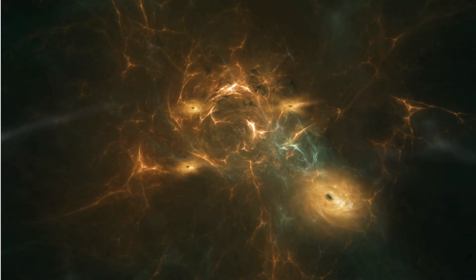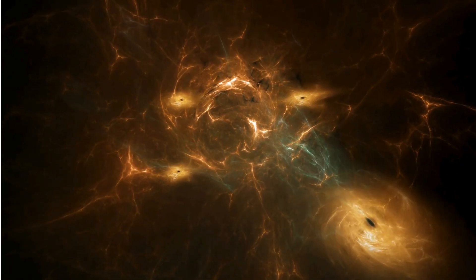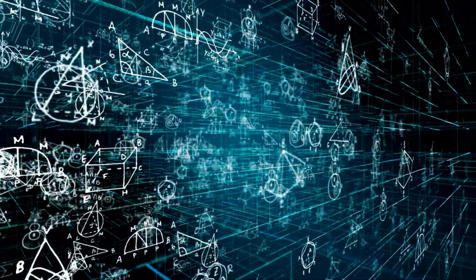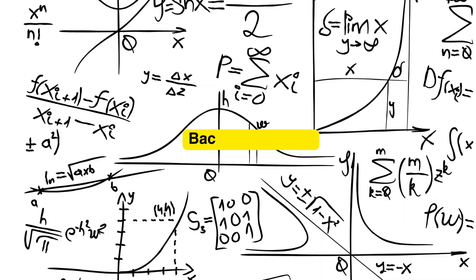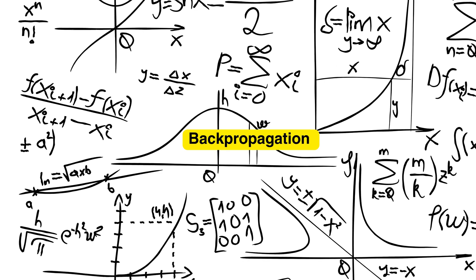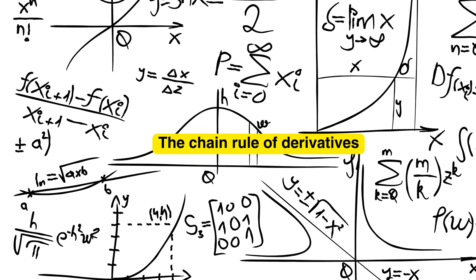Now, let's go a bit deeper for those of you who love the math behind the scenes. Backpropagation is essentially an application of calculus, specifically the chain rule of derivatives. The goal is to minimize the loss function, which is the measure of how wrong the network is. Here's the process.